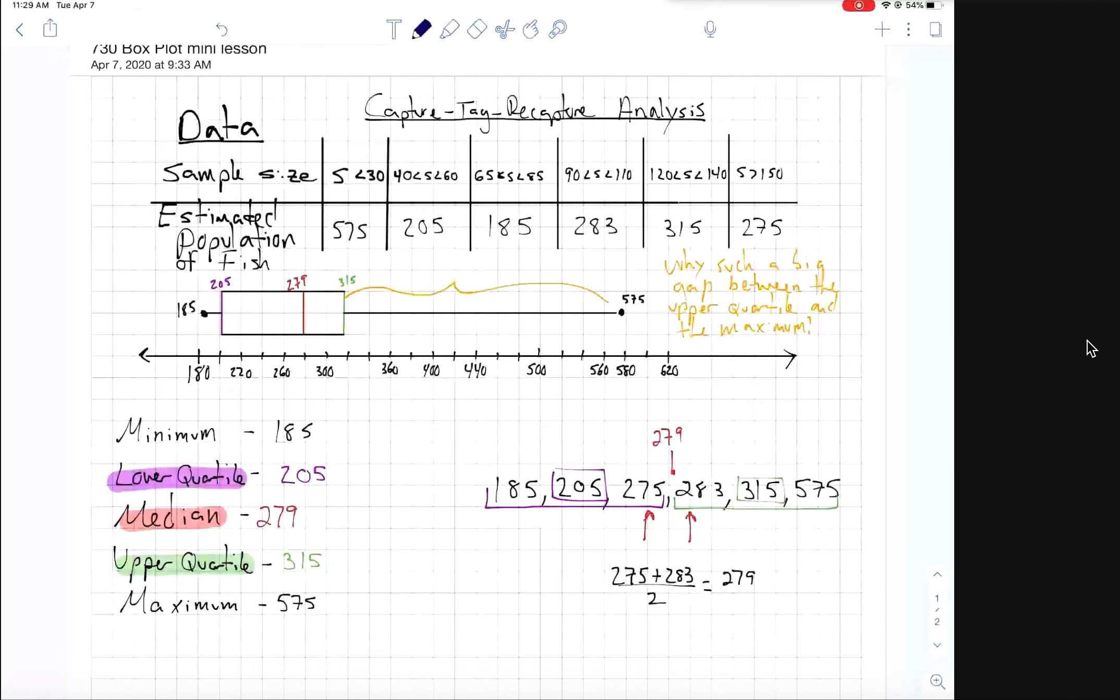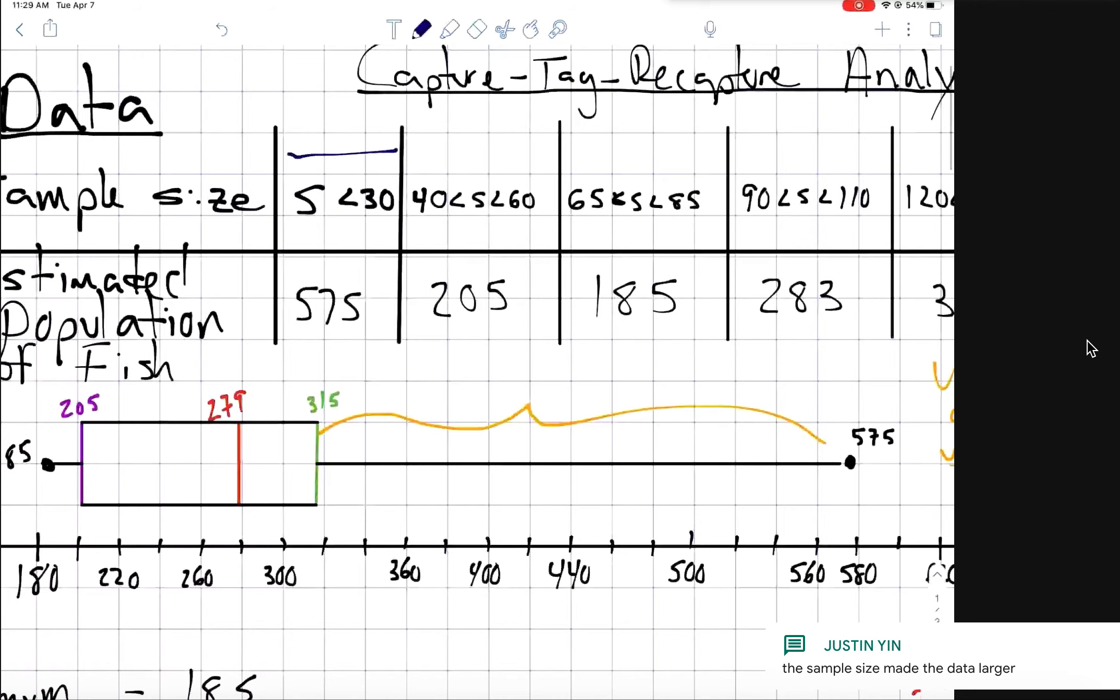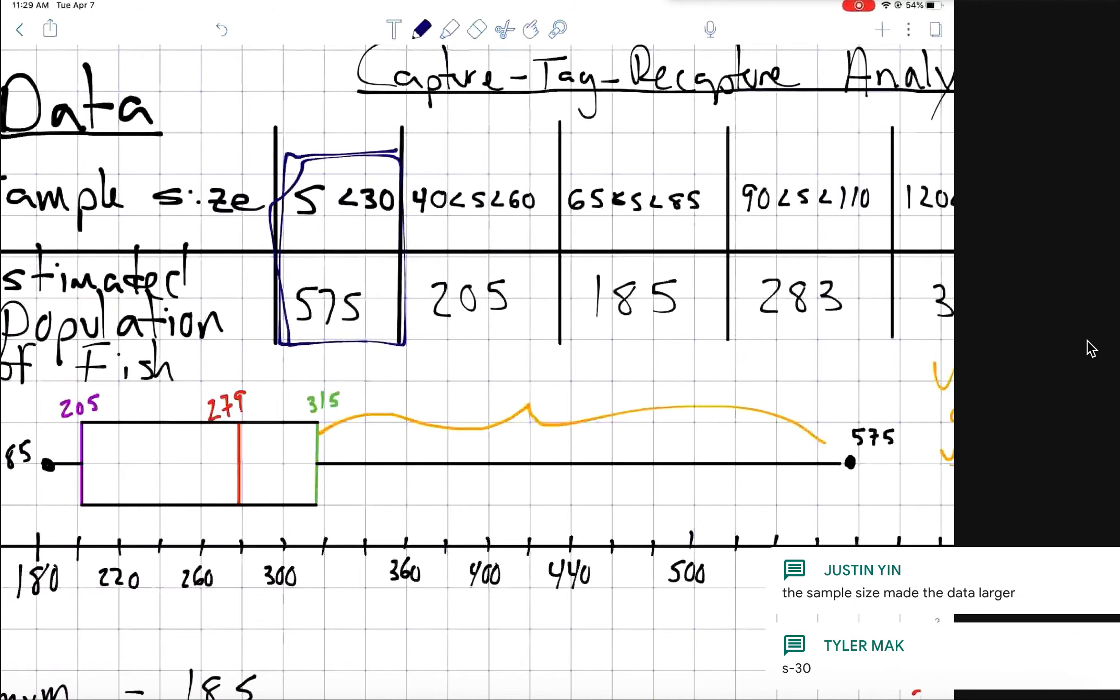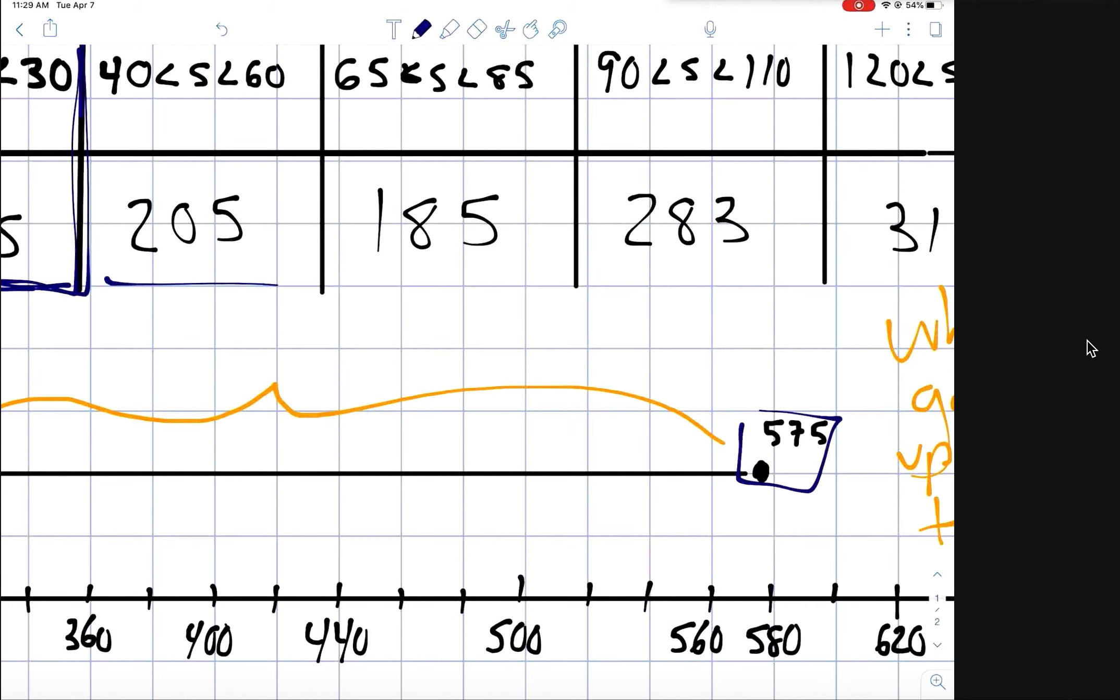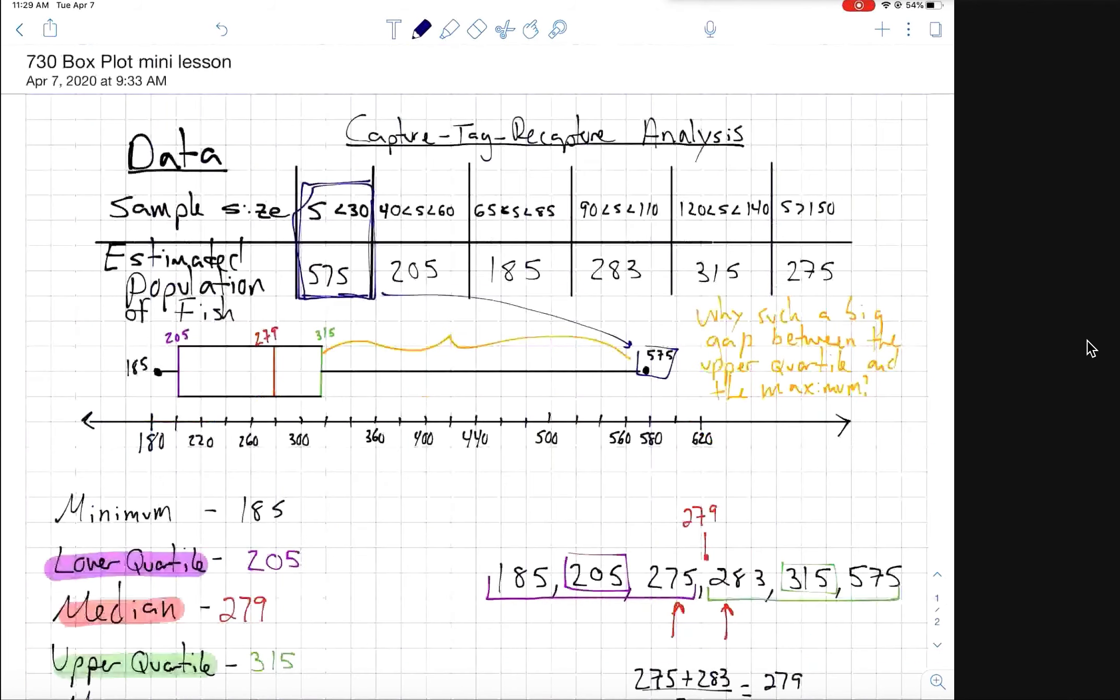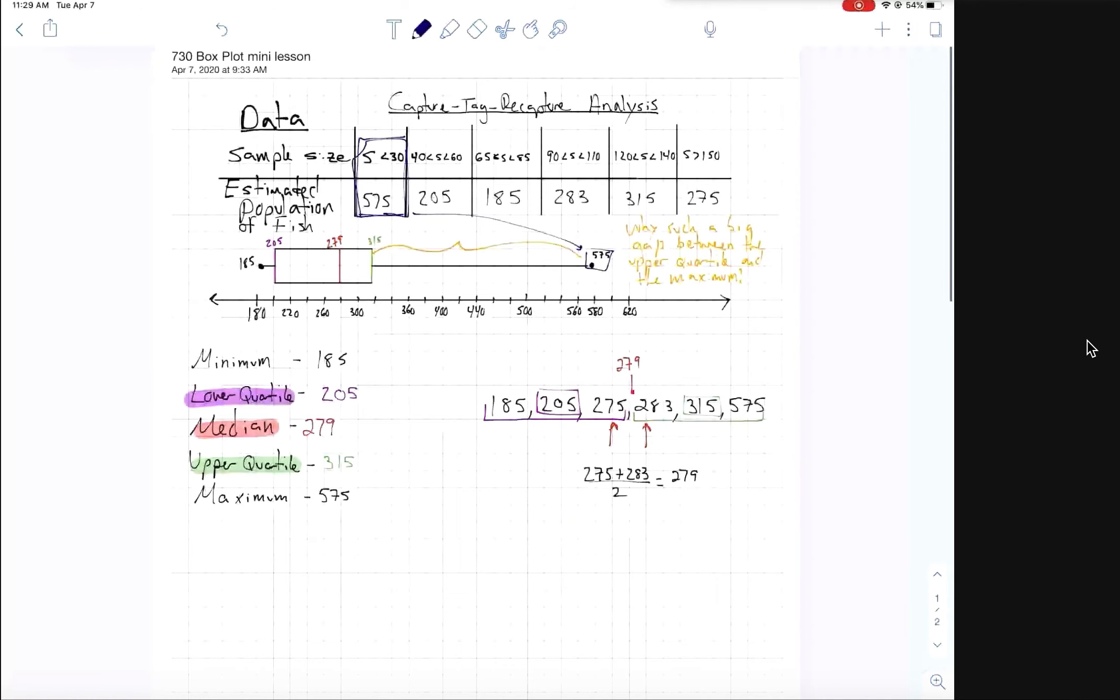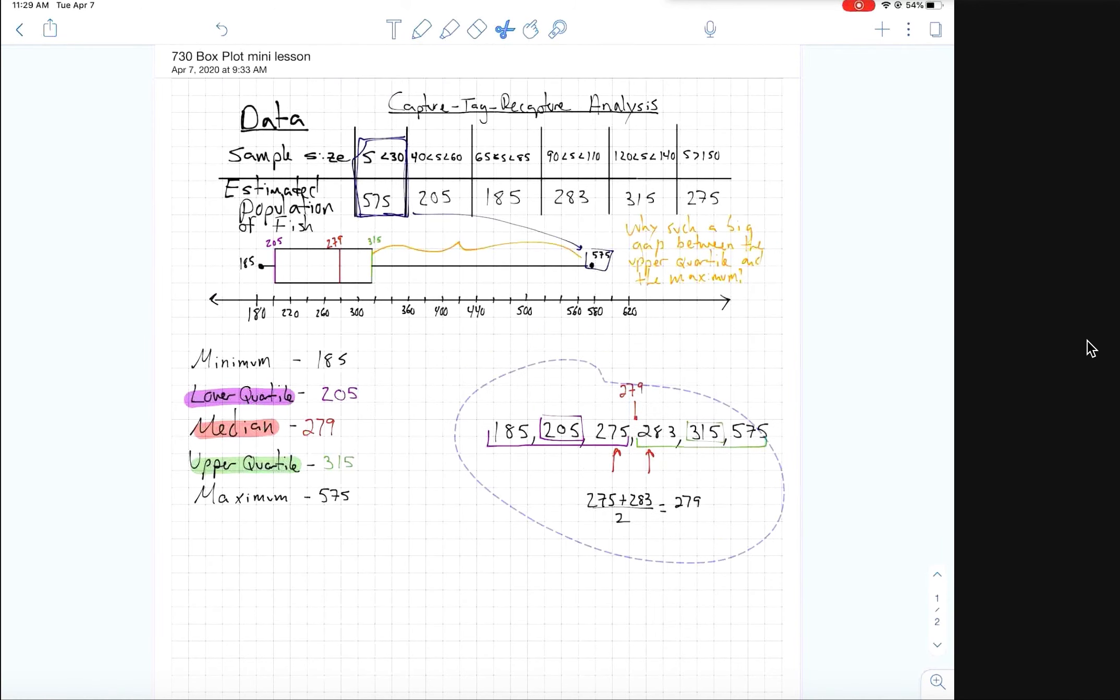Where did the 575 come from in our data? How did we get it when we were capturing the fish? Well, how did this student get it when they were capturing the fish? Their sample size was less than 30. Yeah, look, our 575 came from a sample size that was less than 30. Why is it important to note that, that it came from a sample size that was less than 30? Why is that important to note for us? Something to think about. Why do we think this small sample size created data that was unlike the rest of the data?